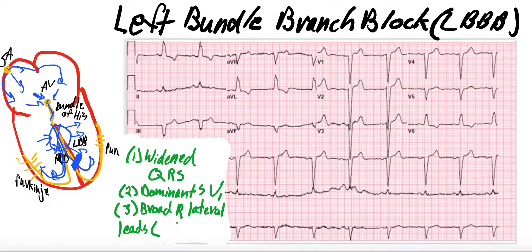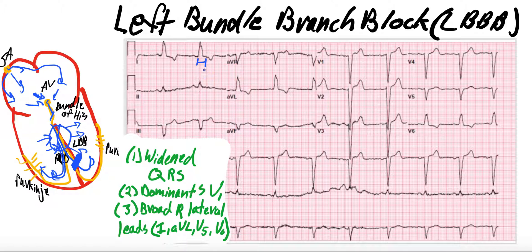Lateral leads — think about it for a minute. Your lateral leads are going to be 1, AVL, V5, V6. In terms of widened QRS, our QRS interval is from Q to R, and the normal is less than 120 milliseconds. If we count the little boxes, this one is widened — it is greater than 120. So we have a widened QRS. You can go to any of the QRS intervals on this EKG; all of them are widened.